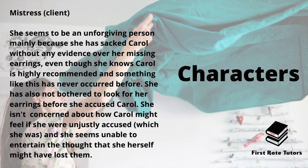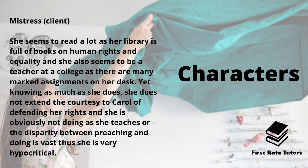The other character, even if we never directly meet her, is the mistress — the lady who accused Victor's mother of theft. She seems to be a really unforgiving person, mainly because she sacked Carol without any evidence over the missing earrings, even though Carol is a highly recommended and honest cleaner with a clean record. This woman hadn't even bothered to look for the earrings before accusing Carol, and she seems unable to entertain the thought that she herself might have lost them. Interestingly, her library is full of books on human rights and equality, and she appears to be a college teacher with many marked assignments on her desk. However, knowing as much as she does, she doesn't extend the courtesy of defending Carol's rights — there's a vast disparity between her preaching and her actions, making her quite hypocritical.